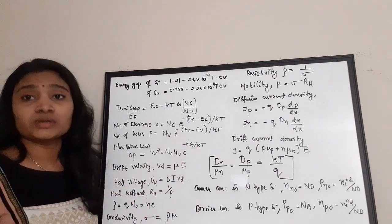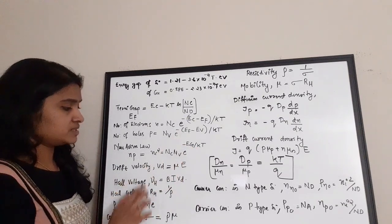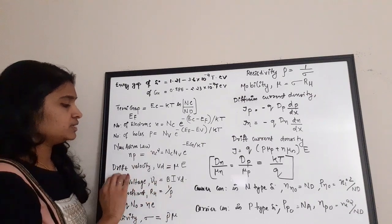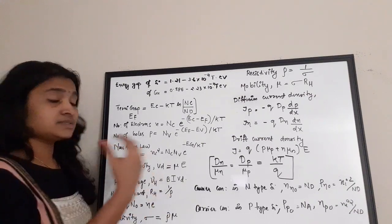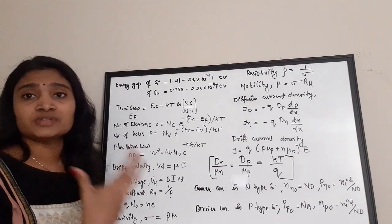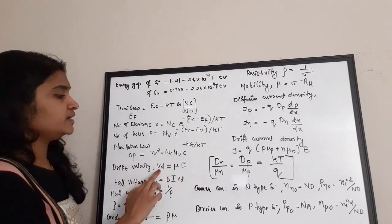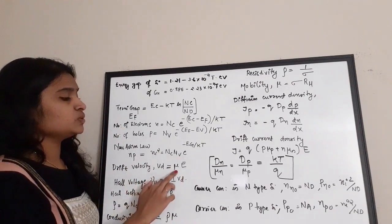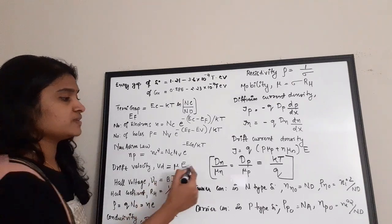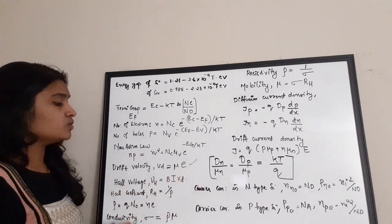Moving on to another important equation: drift velocity. Drift velocity is the speed with which electrons or carriers drift from one end to the other. The equation is: vd = μ × E, where μ is mobility and E is the electric field. This is very important.